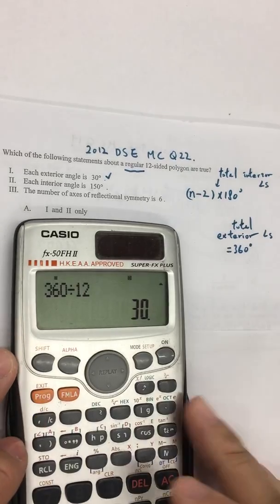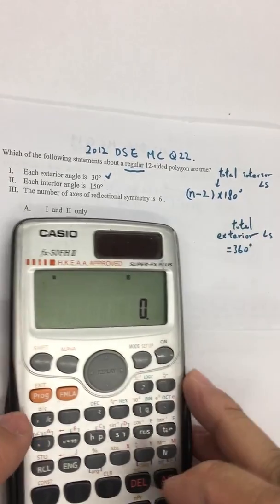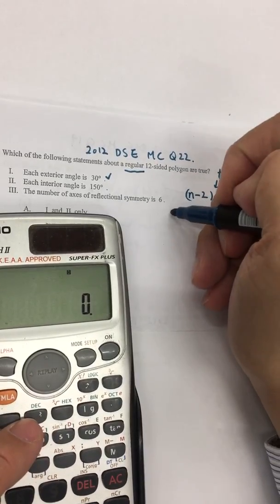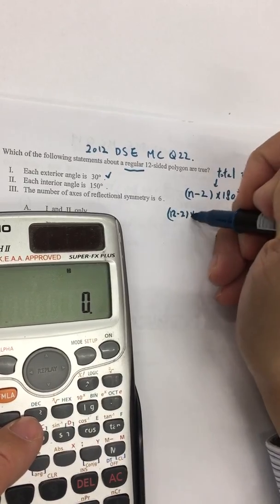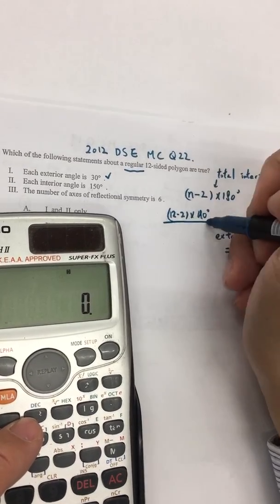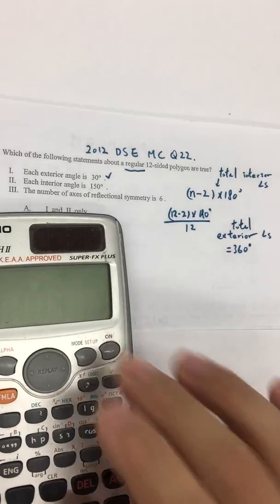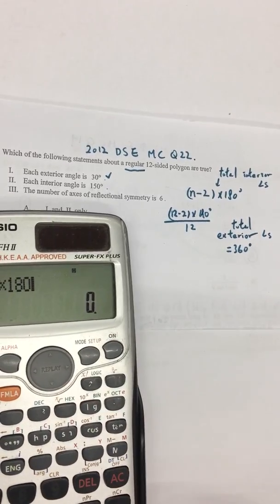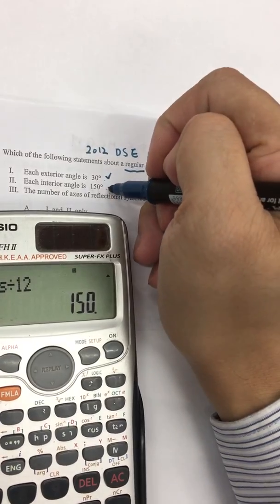So the second one is interior angle. So what we have to use is (12 minus 2) times 180 and divided by 12. So 10 times 180 divided by 12. That means each angle should be 150. That means right.